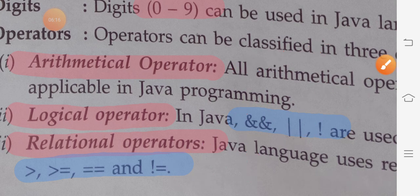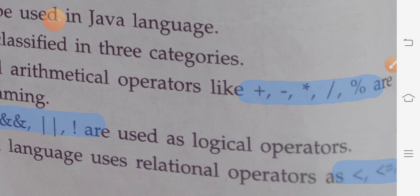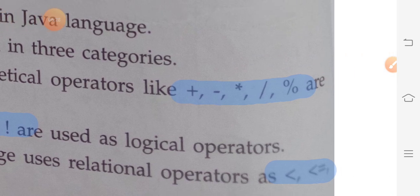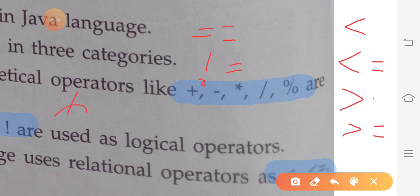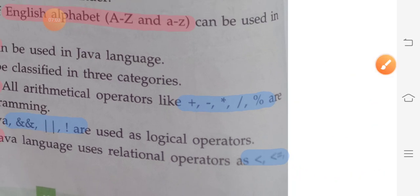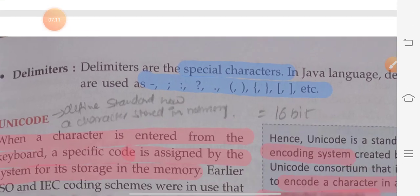Relational operators also give the answer in true or false. Java uses relational operators such as less than, less than equal to, greater than, greater than equal to, double equal to, and not equal to. All these are relational operators that give the answer in either true or false. This is all we need to study about operator types for now.